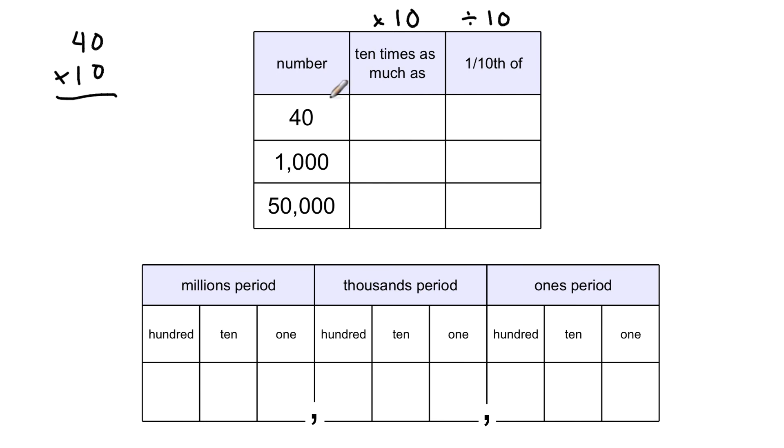So if I'm multiplying forty times ten, I start with the forty, and I take the zero from the ten, and I write it on the end of the number. And to me that's super easy. So let's multiply one thousand times ten. I'm going to start with the one thousand, and I'm not going to write the comma in there because the comma is going to change when I put the zero from the ten onto that number.